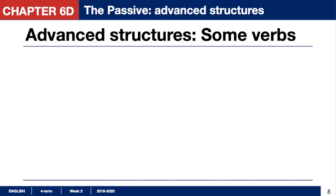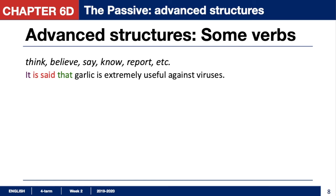Now let's look at some verbs which are also used in advanced passive structures. Generally these verbs are: think, believe, say, report, and some others. For example: 'It is said that garlic is extremely useful against viruses.' This is a special construction: 'it plus passive plus that.' It's said that. It's believed that. It's known that. It's reported that. We can use this construction to express an idea or opinion about something.